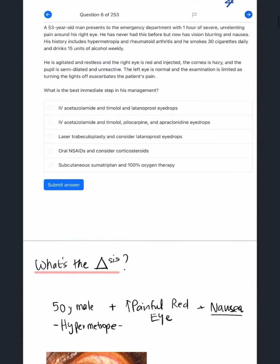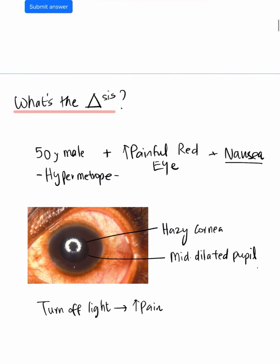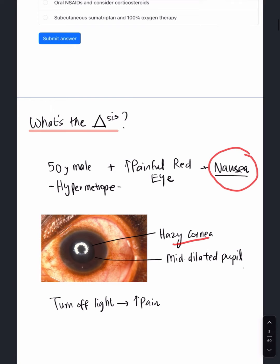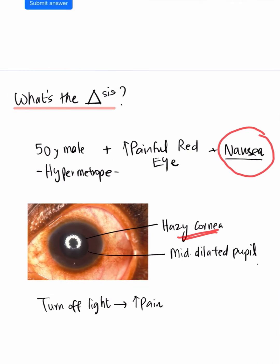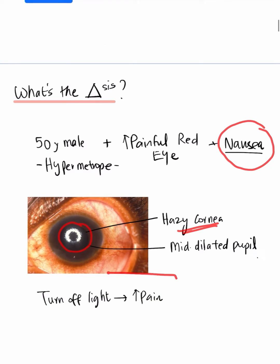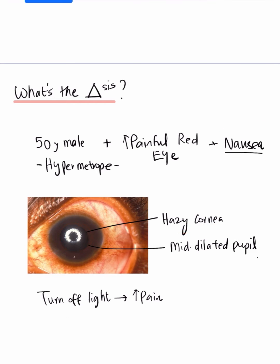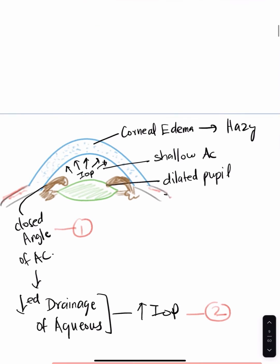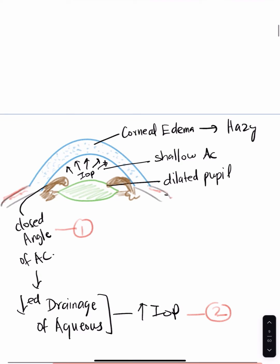To consolidate: we have a 50-year-old male hypermetrope with a painful red eye, blurry vision, and nausea. The cornea is hazy, the pupil is mid-dilated, and turning off the lights increases pain. This is the clinical picture of our patient, and we have a diagram illustrating the same.